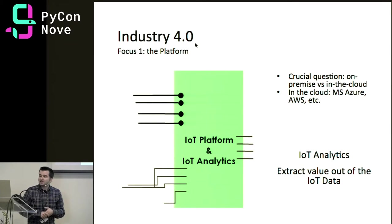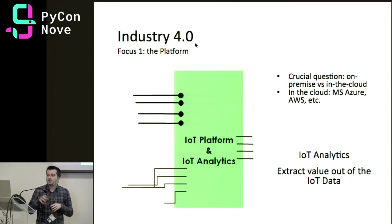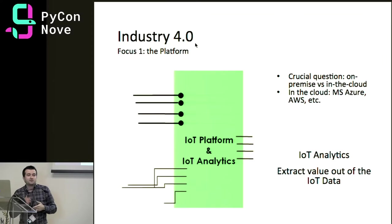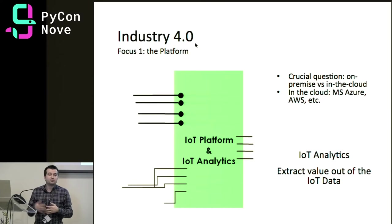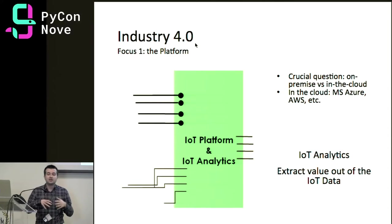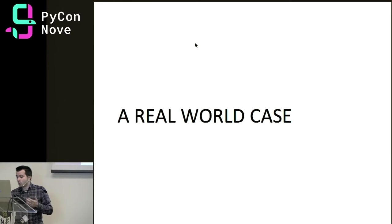The IoT platform is a very big topic, but one crucial question is whether this server is deployed on-premise or in the cloud. The two main cloud solution providers are Microsoft Azure and AWS, but there are many others — for example, PTC with ThingWorx. The focus of this talk is analytics: we gather the data, store it, and extract value from it.